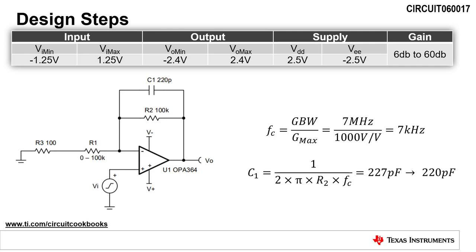Next, we need to calculate the feedback capacitor to set the cutoff frequency, Fc. To keep the cutoff frequency constant for all gains, we will first calculate the cutoff frequency at the maximum gain using the gain bandwidth product of the amplifier. We will then use that cutoff frequency to calculate C1. The cutoff frequency is equal to the gain bandwidth product of the amplifier divided by the maximum gain, Gmax.